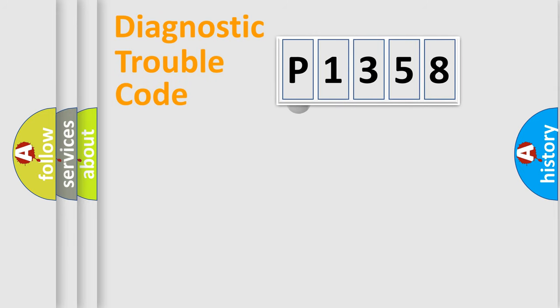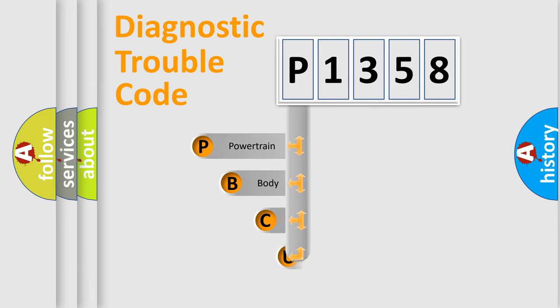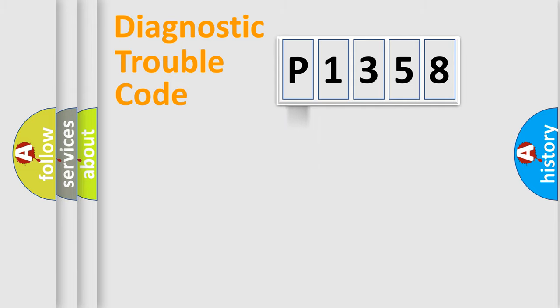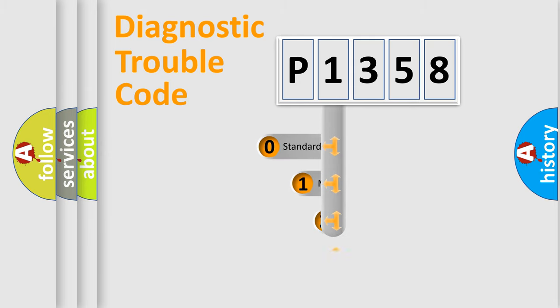First, let's look at the history of diagnostic fault code composition according to the OBD-2 protocol, which is unified for all automakers since 2000. We divide the electric system of automobile into four basic units: Powertrain, body, chassis, and network. This distribution is defined in the first character of the code.